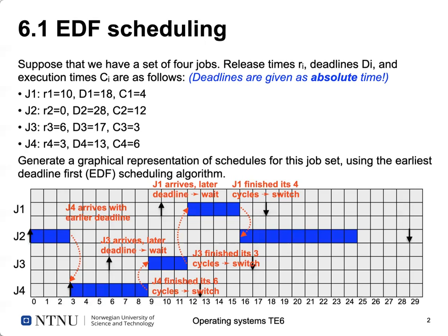In our first example for EDF scheduling, we have a relatively typical setup with four different jobs or tasks. Each task has a release time — the time at which it becomes available — a deadline, which is the point in time when it has to be finished, and the amount of compute cycles it needs to complete.